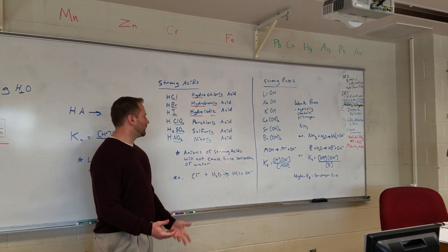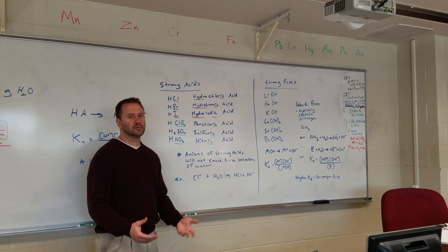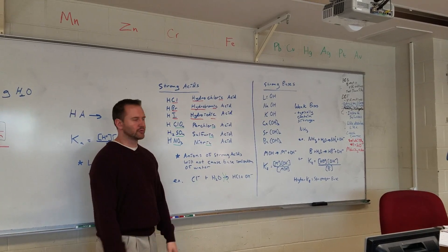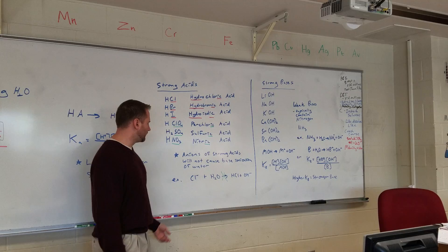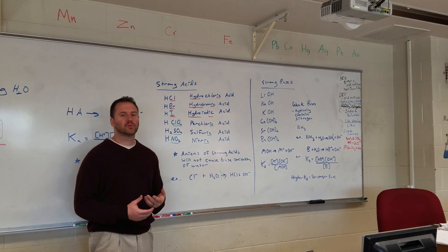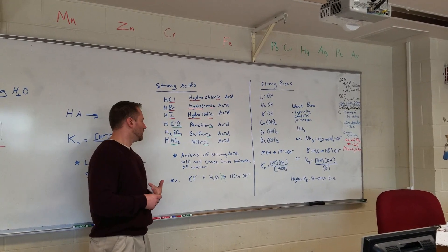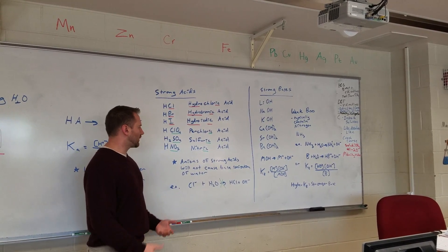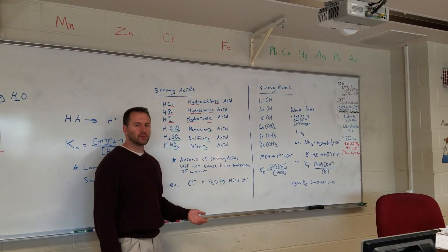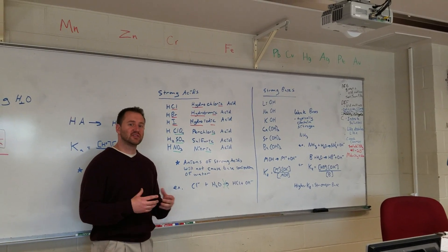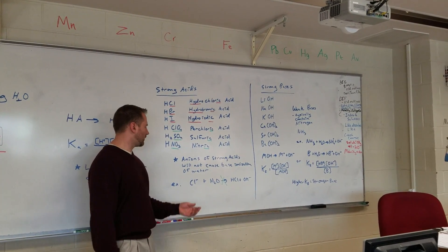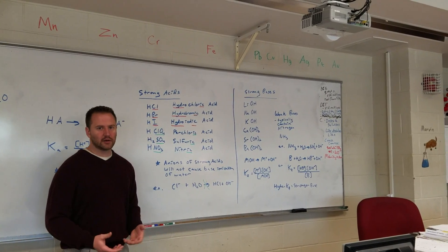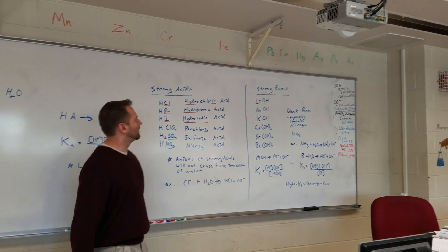And a way you can tell whether or not something's going to be a strong acid or a base, and this requires a little bit more research, and you're probably not having to do it, but just so you know, anions of strong acids will not cause water to basically give up a proton. It will not cause water to break apart when you put it in. So chloride ions are relatively stable by themselves. They're not going to cause water to ionize and form hydroxide ions and the corresponding acid.